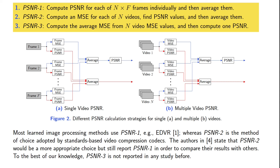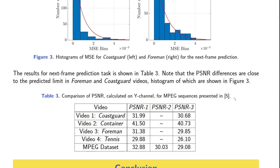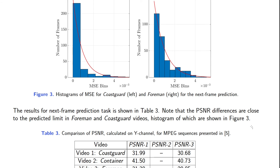For instance, in the paper 'Efficient Video Super-Resolution Through Recurrent Latent Space Propagation', the authors state that PSNR 2 would be a more appropriate choice for video, but they still report PSNR 1 to be able to compare results with others. As an example, consider a next frame prediction task. The results of this task are shown in Table 3. Please note that PSNR 1 is around 2.8 dB higher than PSNR 2. This significant difference shows the importance of agreement on PSNR calculation for fair comparison. Also, the Foreman and Coast Guard sequences show exponential-like behavior in the per-frame MSE distribution, as seen in Figure 3, which creates the difference visible in Table 3.